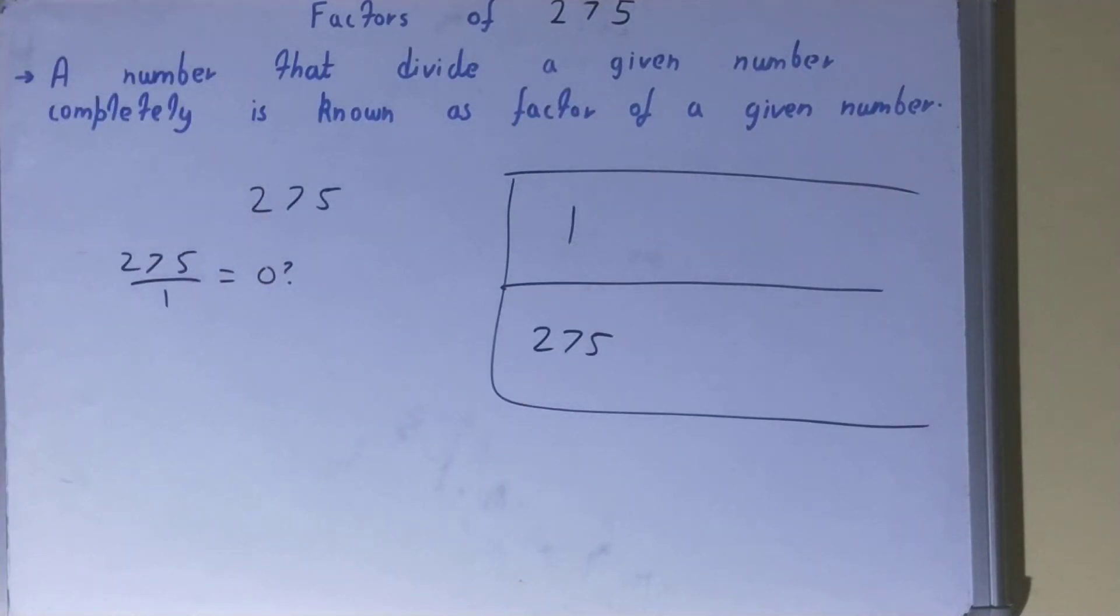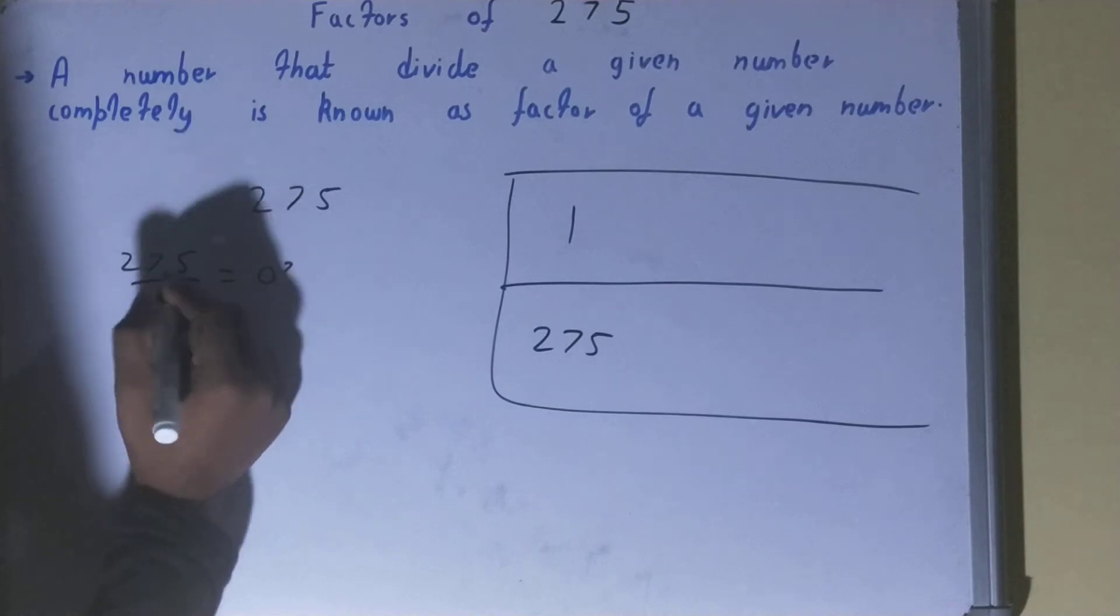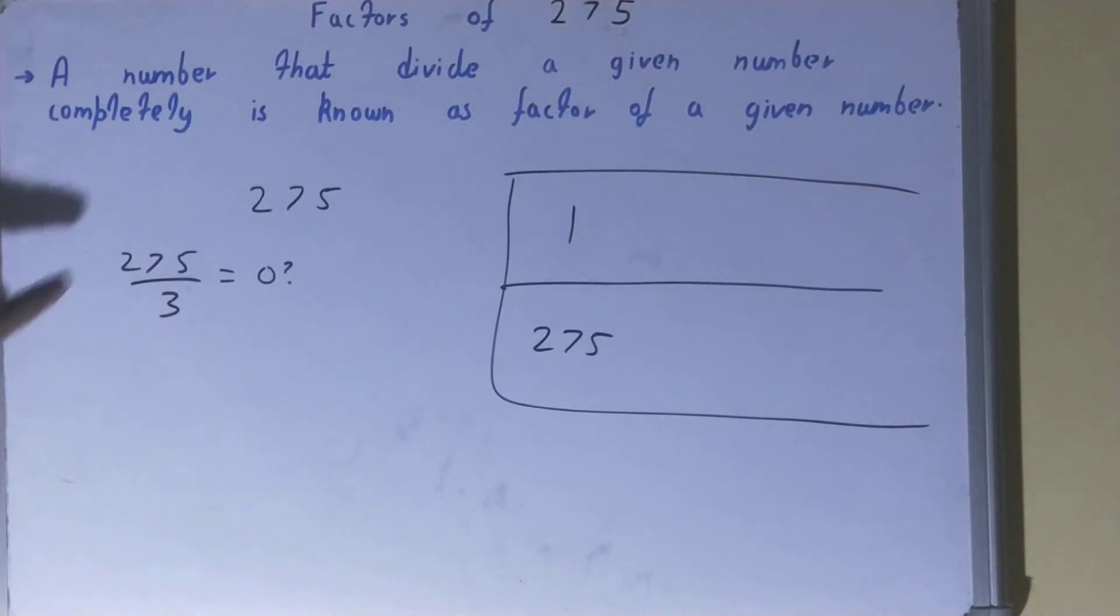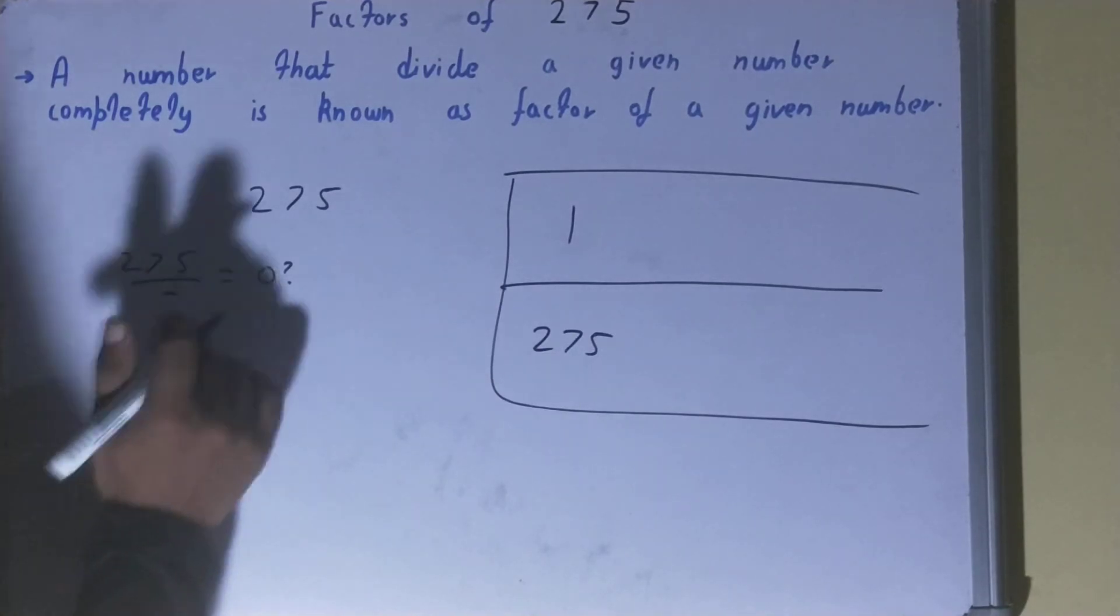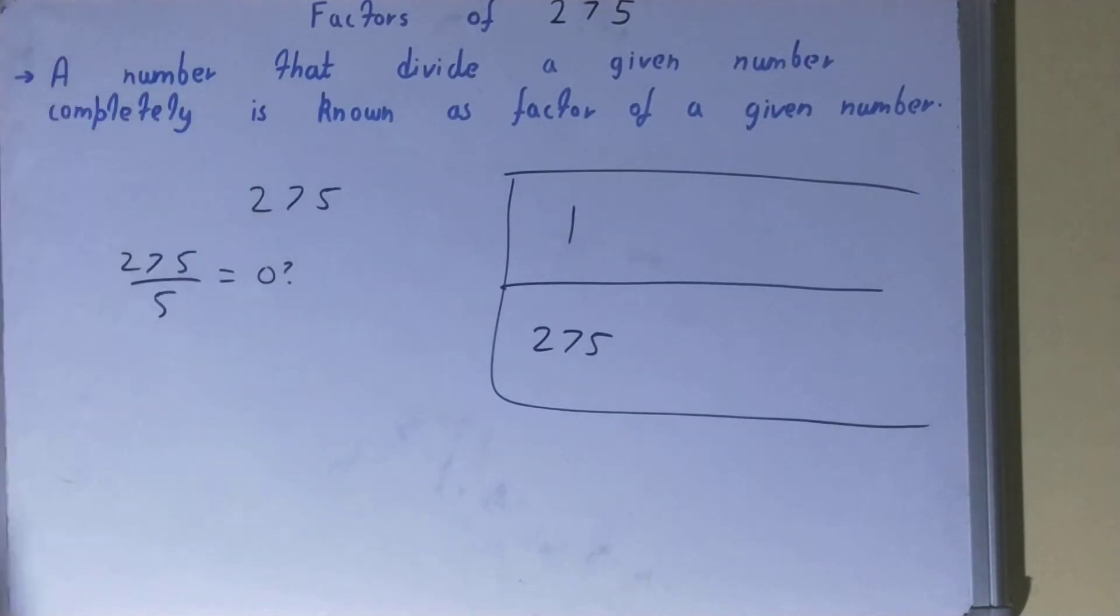So 275 will also be the factor automatically. After 1 we'll check with 2. Now one thing you need to see: whenever you have an odd number in the numerator, just ignore checking with even numbers in the denominator. So ignore even numbers like 2, 4, 6. We'll ignore 2 and check with 3. 3 nines are 27 and 3 ones are 3. 2 left, not possible. Let's check with 5.